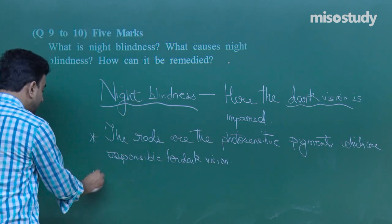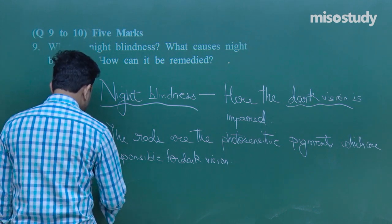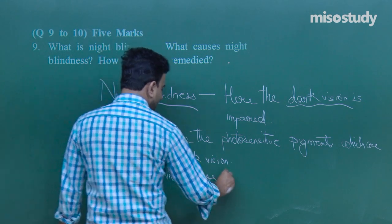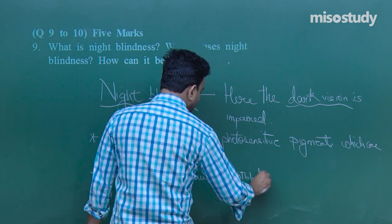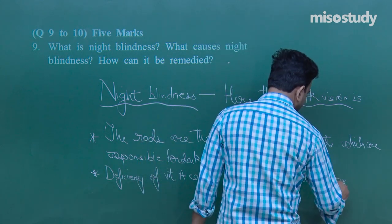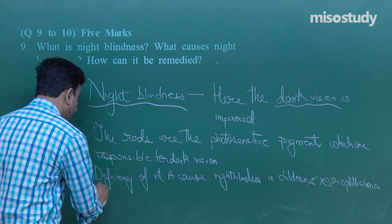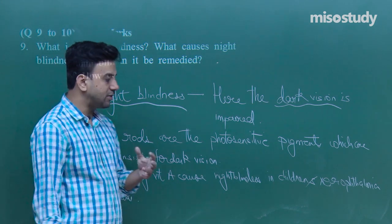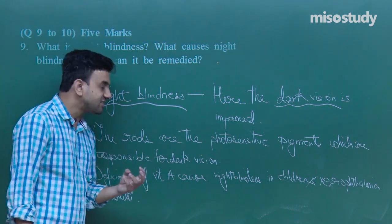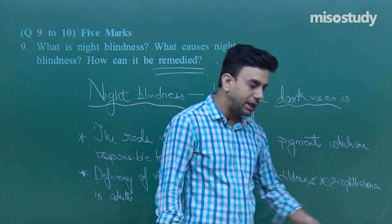Deficiency of vitamin A causes night blindness in children and xerophthalmia in adults. If children are not given foods rich in vitamin A — such as cod liver oil or leafy vegetables — the rhodopsin protein will not be synthesized and the rods will be deficient. The remedy is to give more vitamin A, especially during the developing stage.